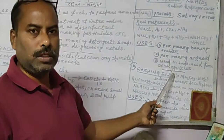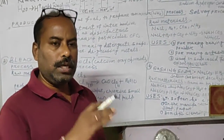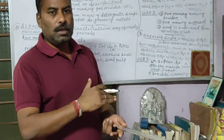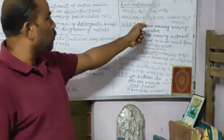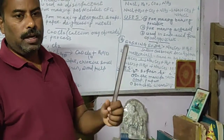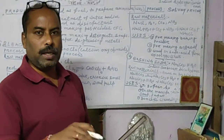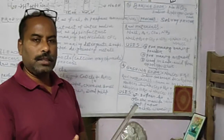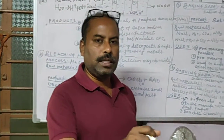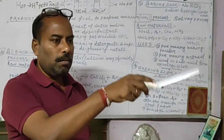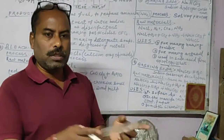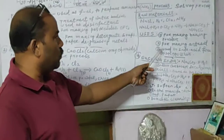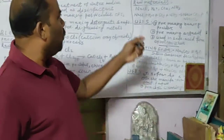Baking soda is also used in soda-acid fire extinguishers. A small red cylinder keeps baking soda and acid in separate chambers. When needed, the partition is broken mechanically, and baking soda reacts with the acid to produce carbon dioxide and foam. This CO₂ and foam cuts off fresh oxygen from the burning object, extinguishing the fire.